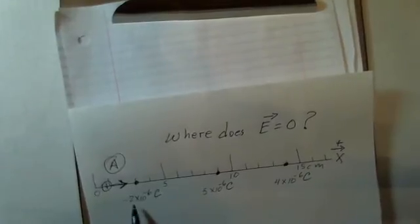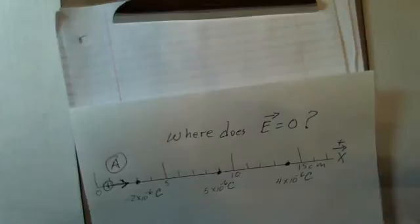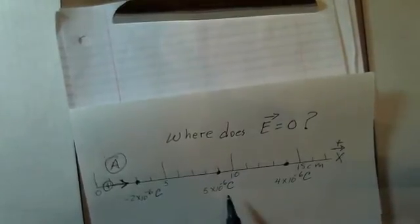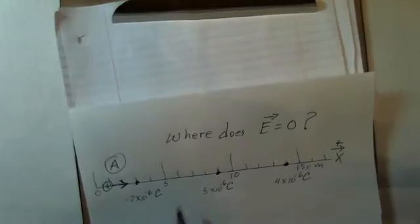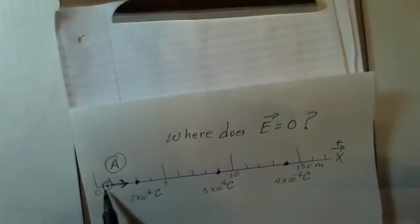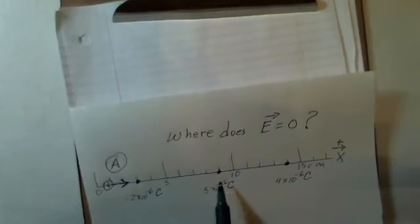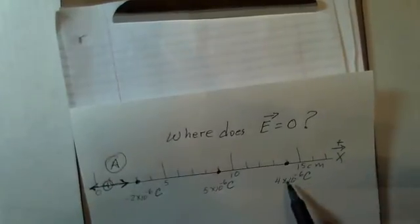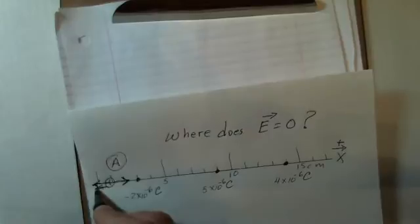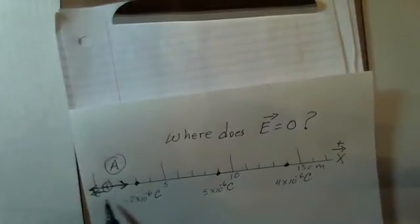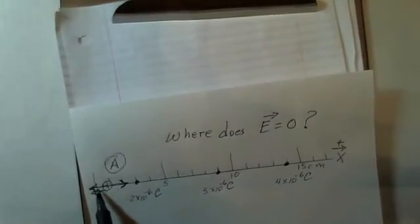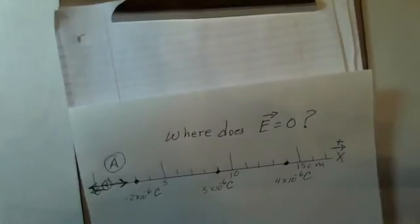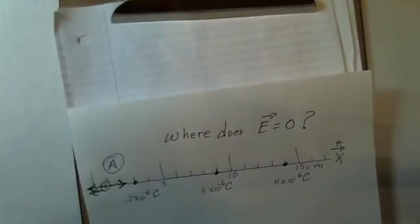I'll call this the minus 2, this the 5, this the 4, and ignore the 10 to the minus 6 for talking purposes. What about the 5 charge? Electric field points away from a positive charge. The positive test charge out here would be repelled by the plus 5 and similarly for the plus 4 charge, we're going to create an arrow off to the left. So there is a possibility that this arrow and the sum of these two arrows might match in magnitude and add to 0.